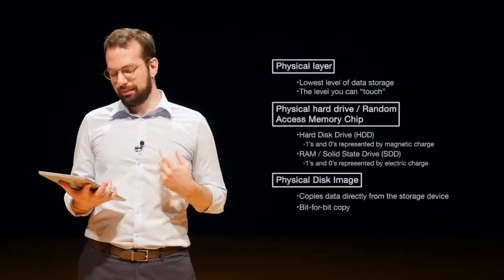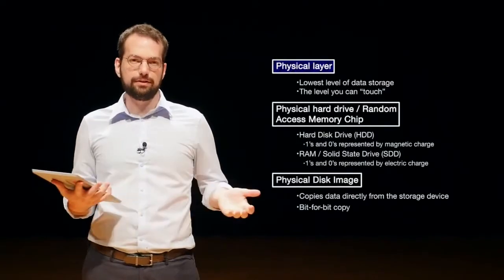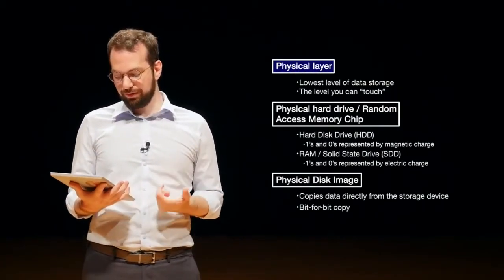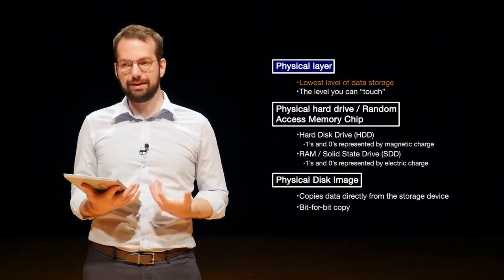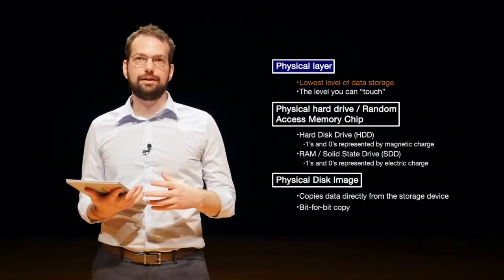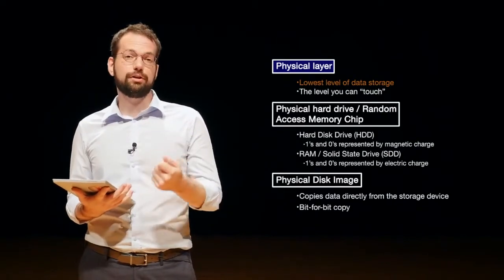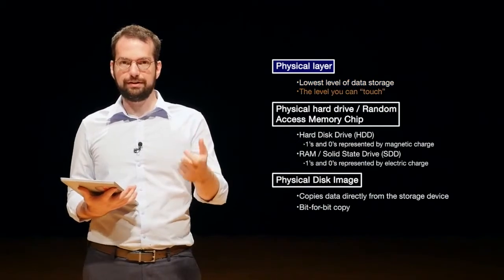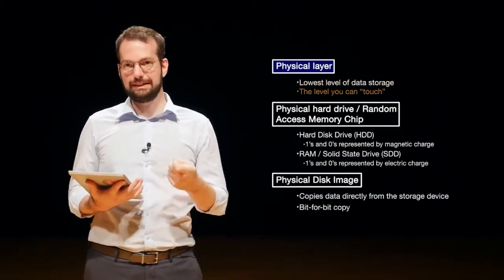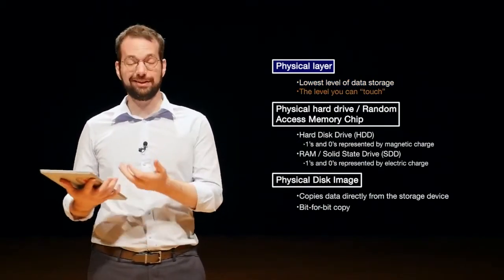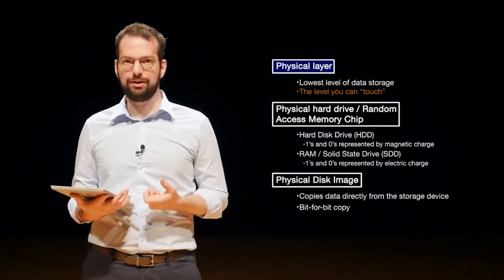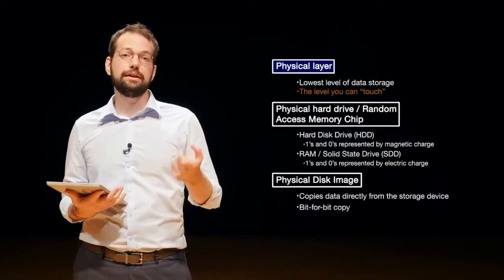First off, whenever we're representing data, we say that the physical layer is the lowest layer that we can represent data on. It's the lowest level of data storage and it's kind of the layer you can touch. Think about a USB stick or hard drive or even your mobile phone. All of those are things you can touch and they also store data or information.